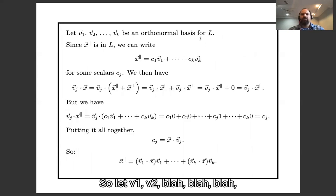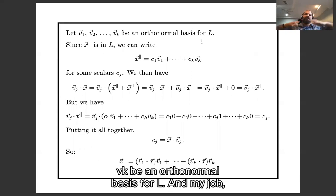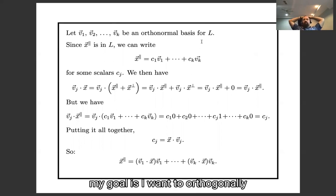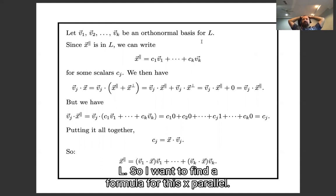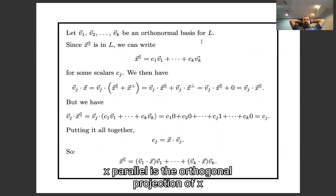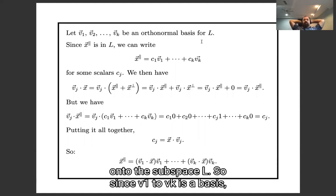Okay, so let v1, v2, blah blah blah, vk be an orthonormal basis for L. And my job, my goal, is I want to orthogonally project the vector x onto the subspace L. So I want to find a formula for this x-parallel. You know, x-parallel is the orthogonal projection of x onto the subspace L.